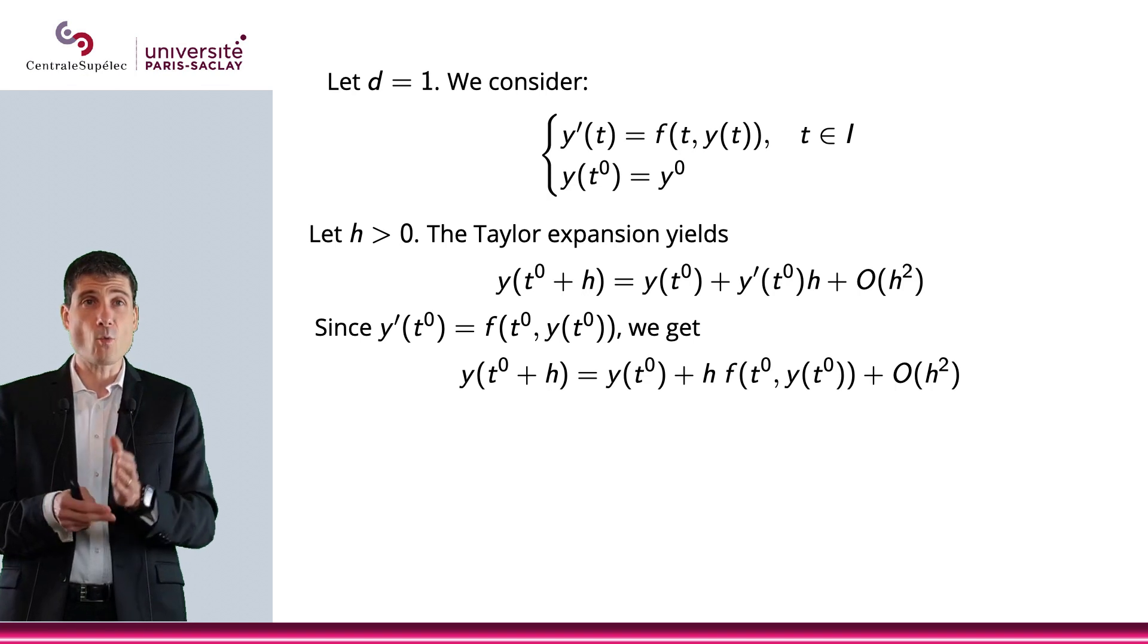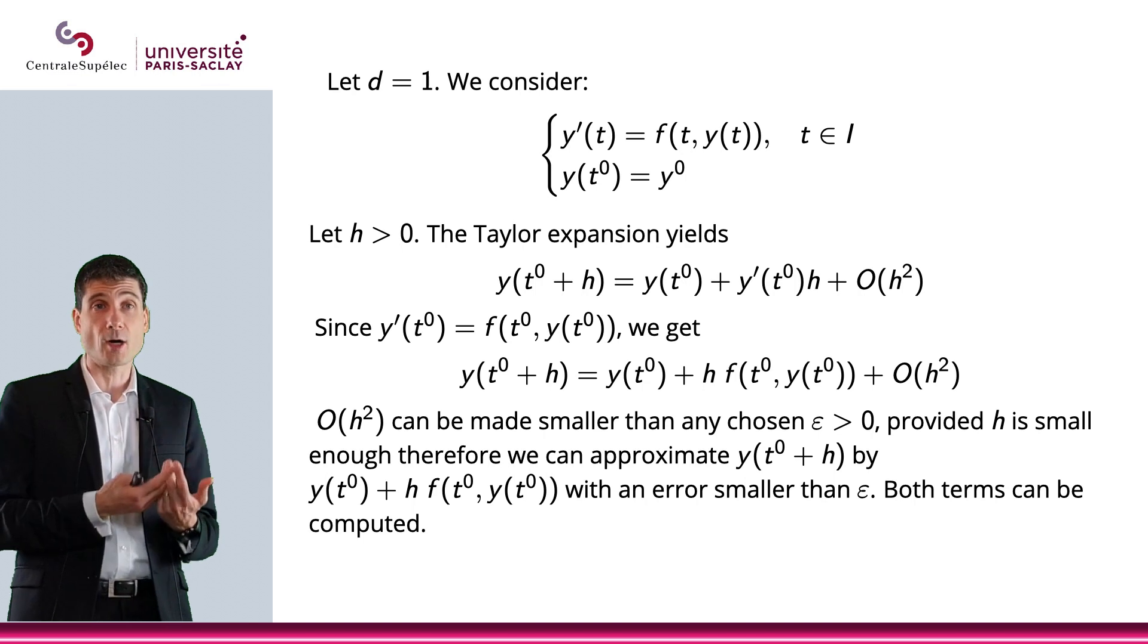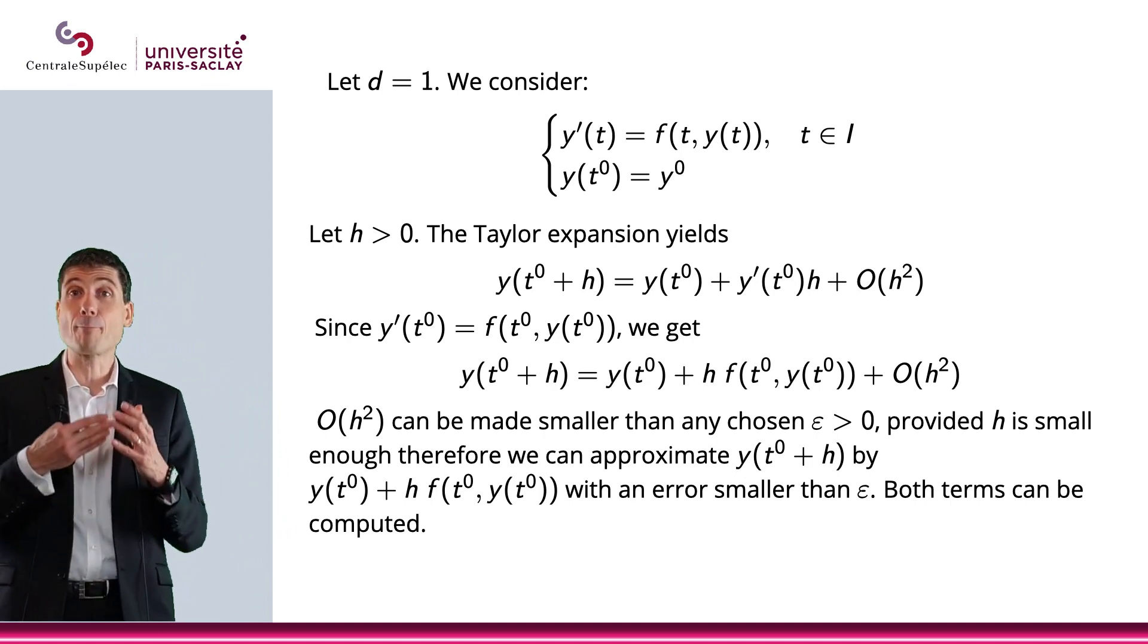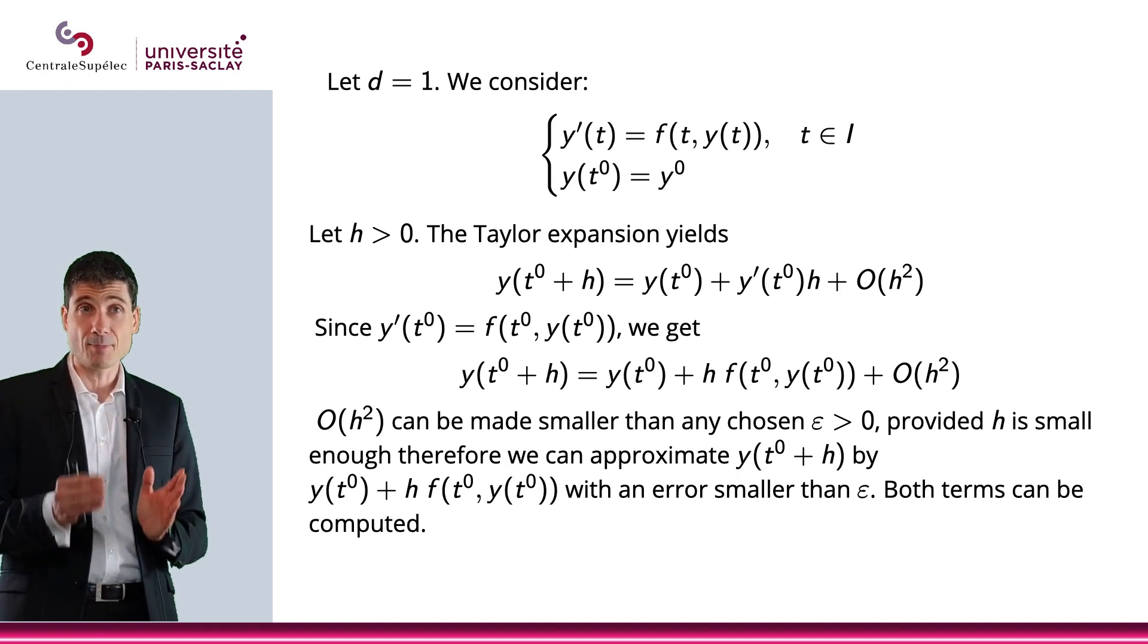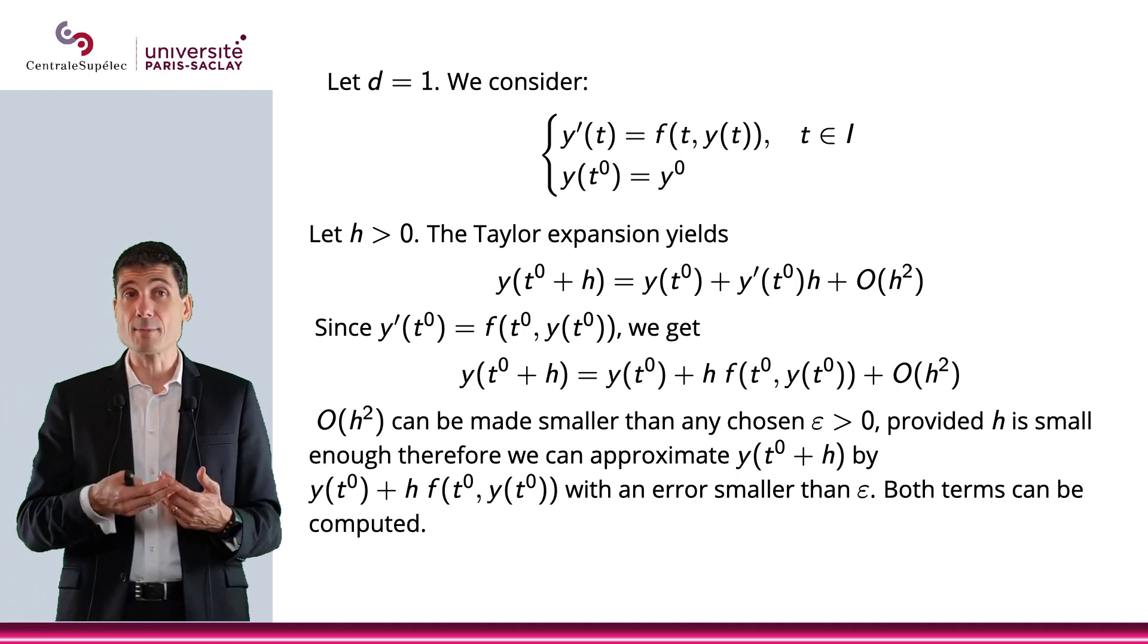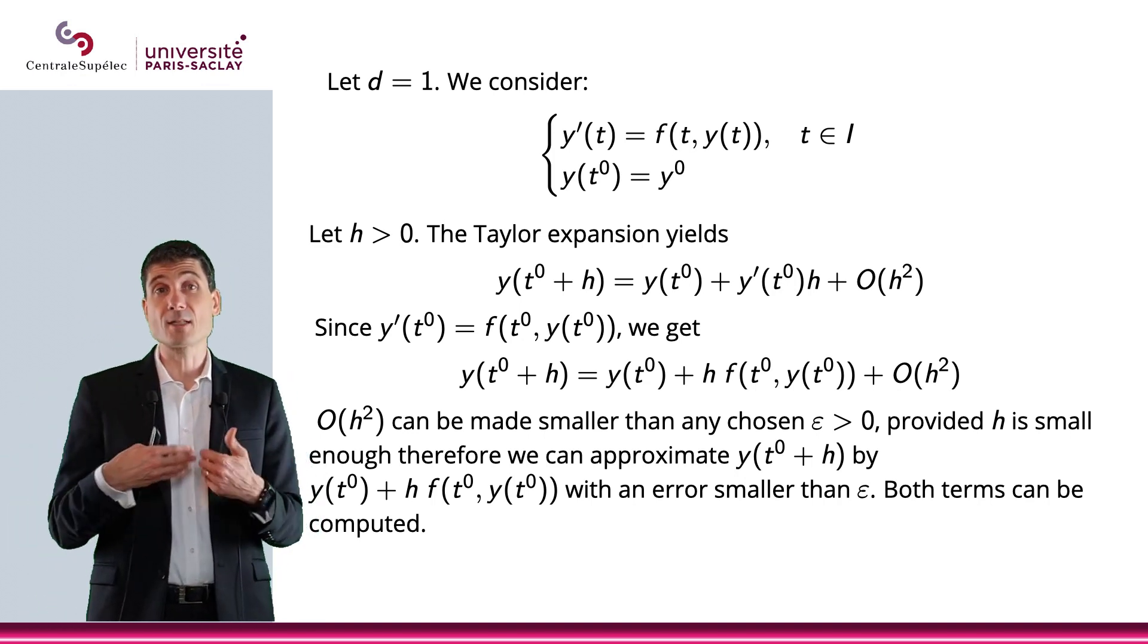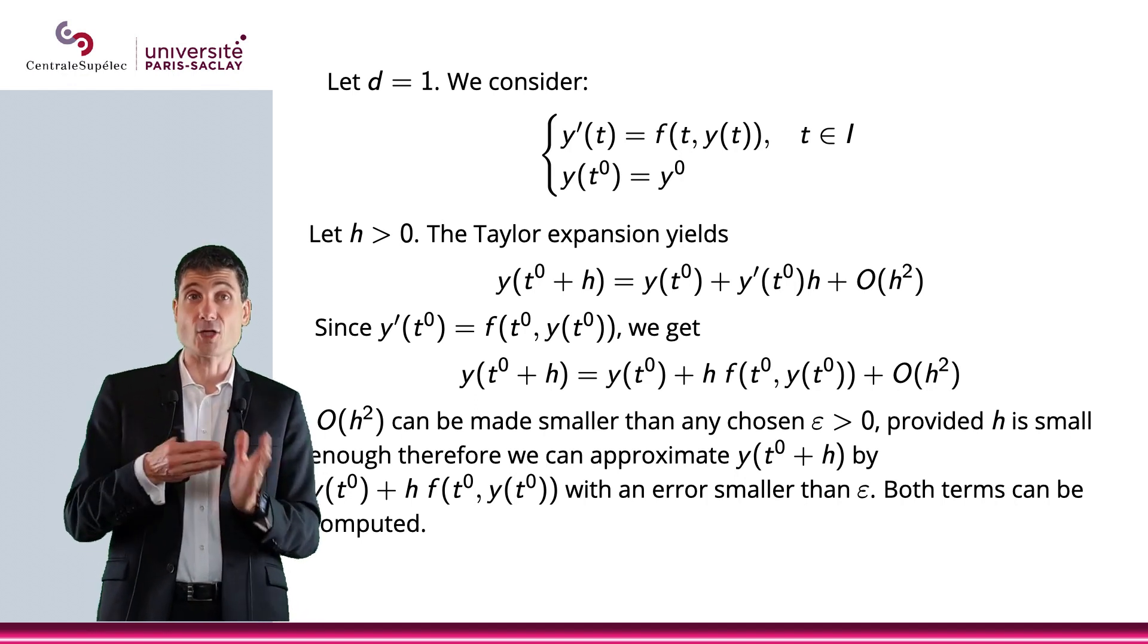So, what we're saying is that since O of H square can be made smaller than any chosen epsilon, provided that H is small enough, then we can approximate Y of T0 plus H by Y of T0 plus H times F of T0, Y of T0, with an error that will be smaller than any epsilon, provided that my H is small enough.